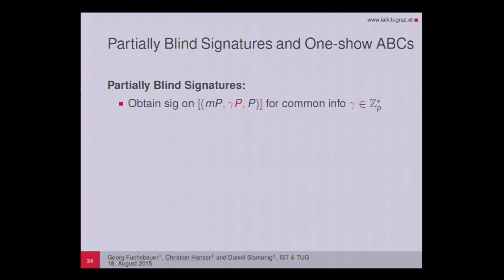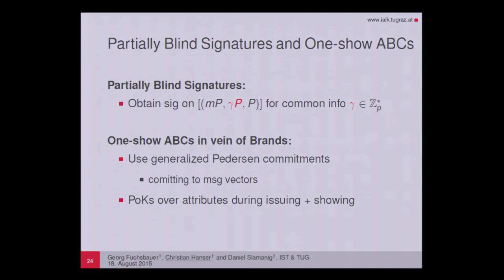For partially blind signatures, we extend the vector length from two to three and use the additional component to include the common information. We can also build one-show ABCs by exchanging the Pedersen commitment for a generalized Pedersen commitment, which allows committing to message vectors; additionally, during issuing and showing, proofs of knowledge over the attributes are required.